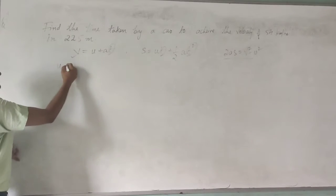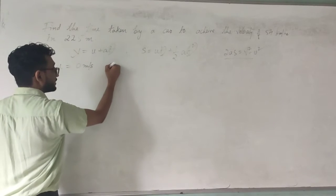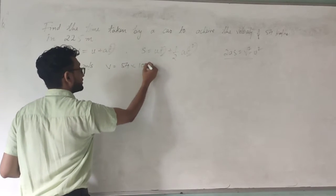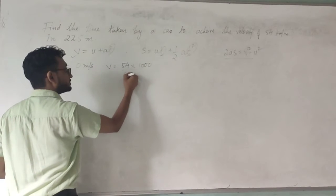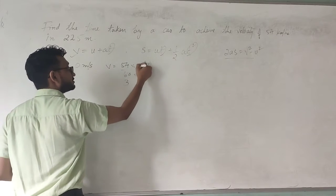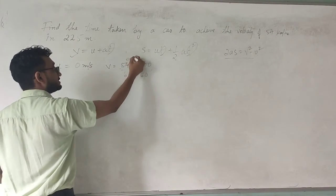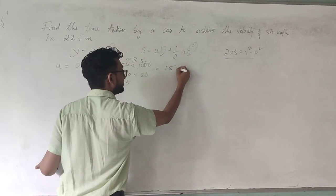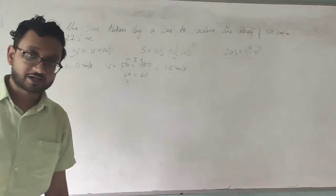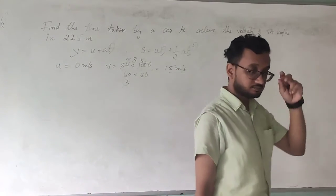So first thing you need to do is state the values. u is 0 meters per second, final velocity v is 54 kilometers per hour. Converting it in meters per second, 54 becomes 15 meters per second as the conversion of the velocity.